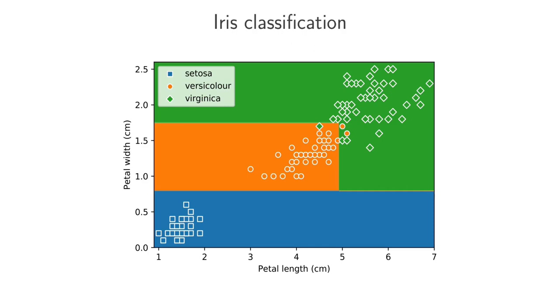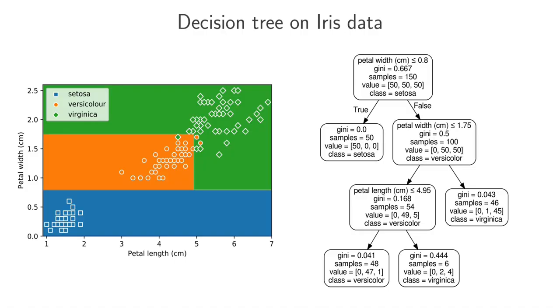So why is this type of model called the decision tree? That's because we can actually represent these blocked decision boundaries. We can represent that with a tree-like structure. So this tree structure that we see on this side corresponds exactly to the decision boundaries given on this side.